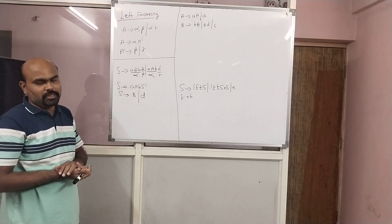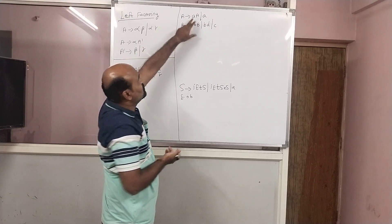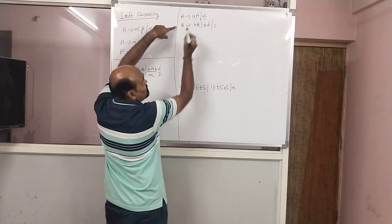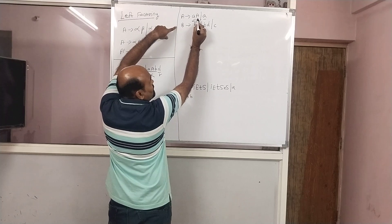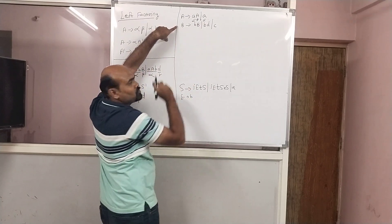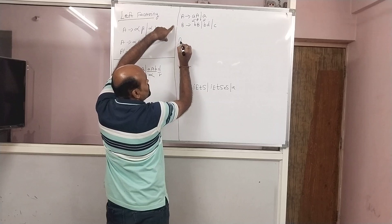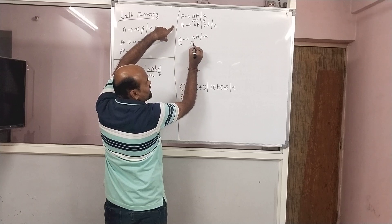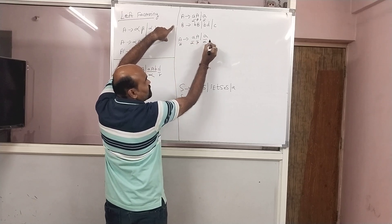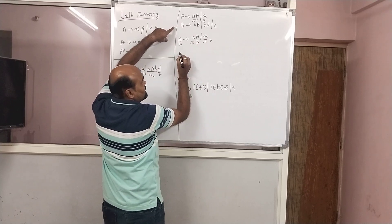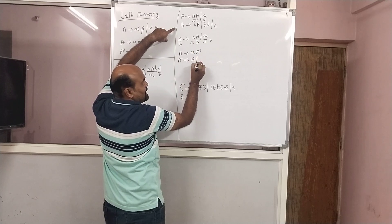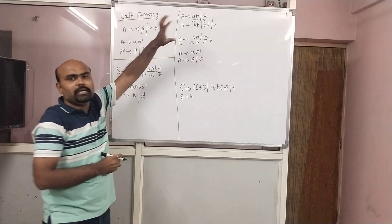Let's take another example. Here the first part and second part are the same, so that is alpha, that is beta, but there is no gamma. So A gives alpha A-dash, and A-dash gives beta slash epsilon — since there is no gamma, we write epsilon.